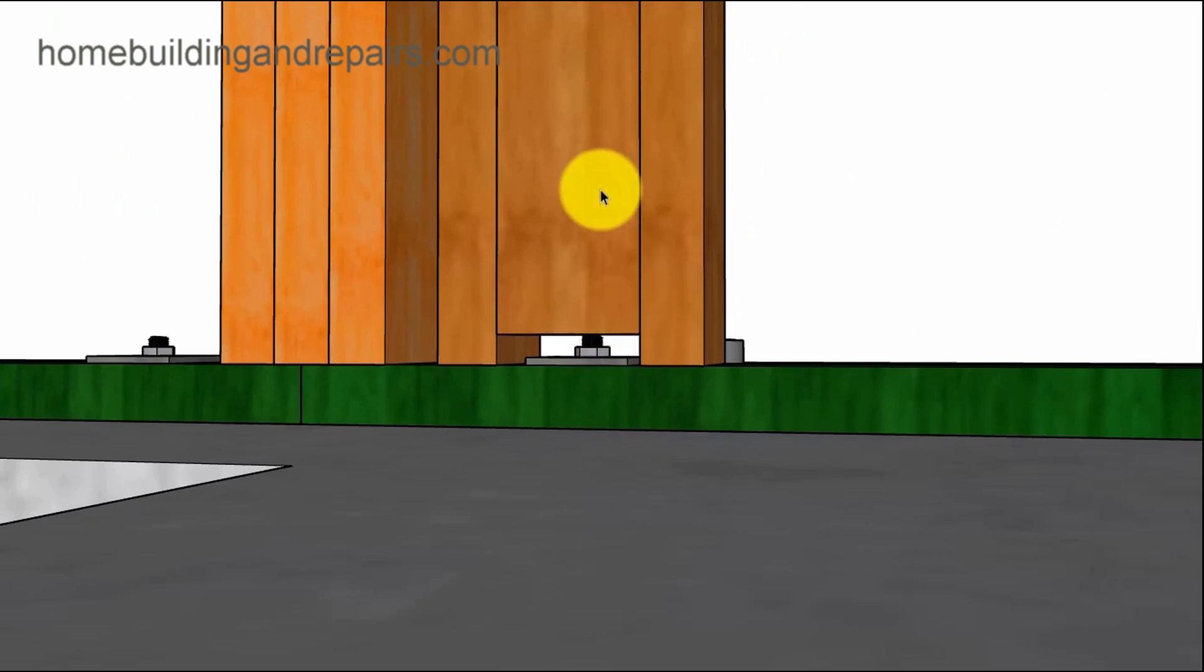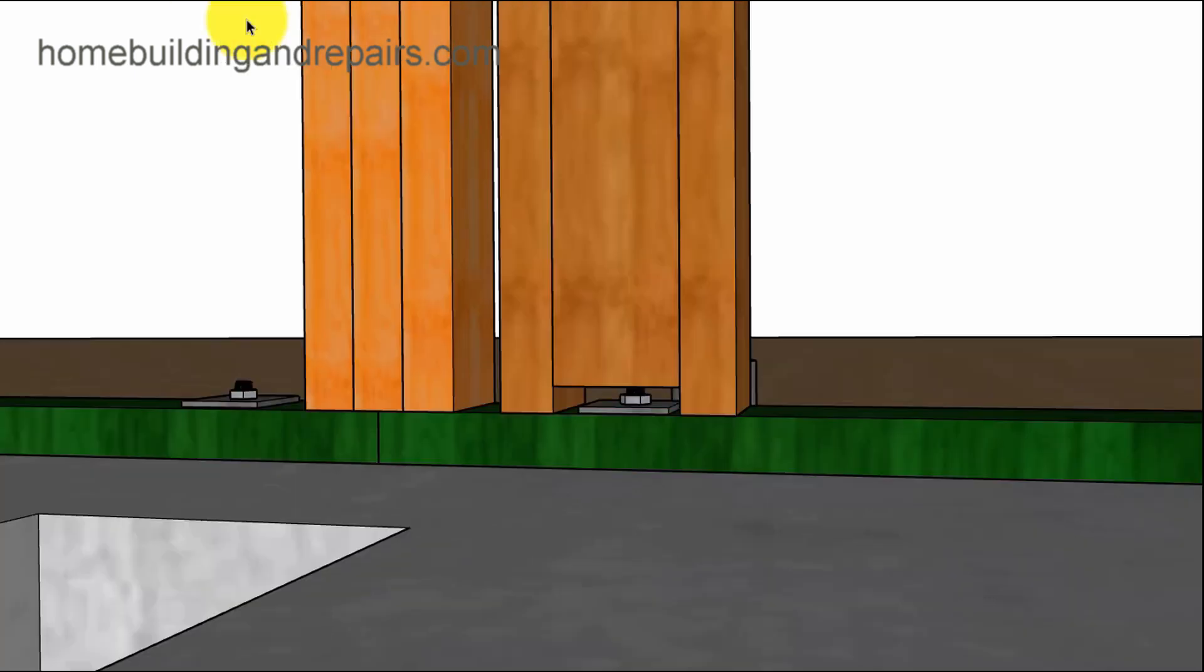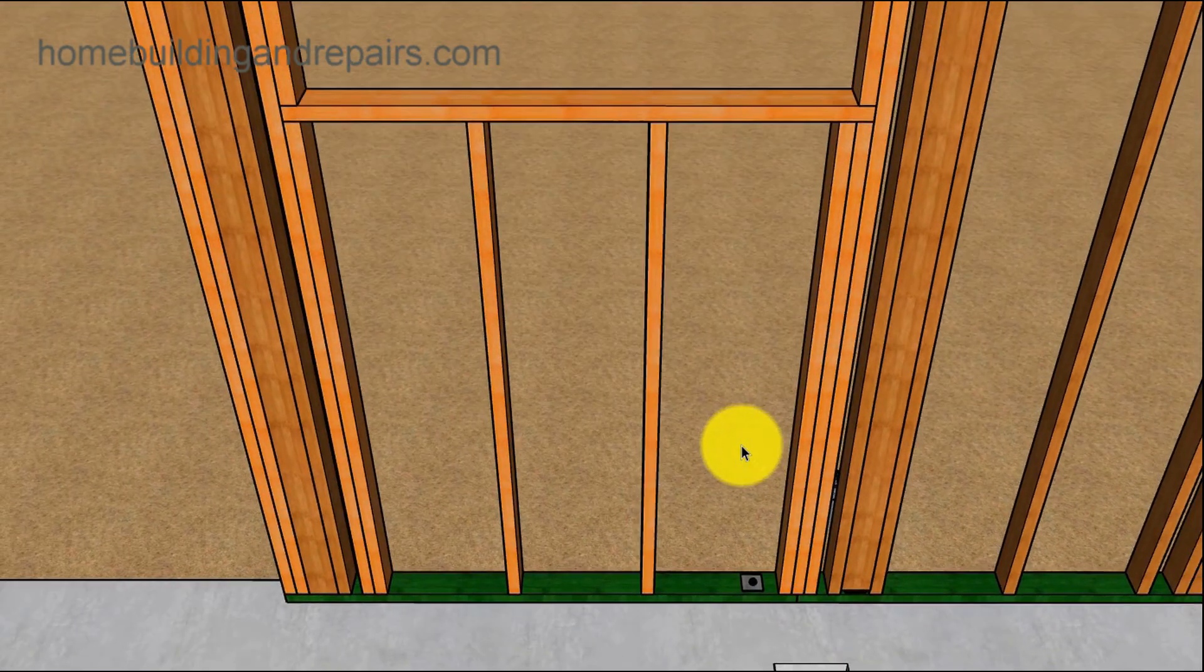This is where the wall is going to intersect to allow for the anchor bolt. Not going to be a big deal, but just something you're going to need to be aware of.